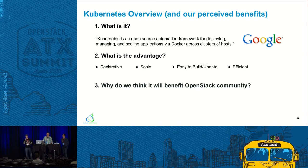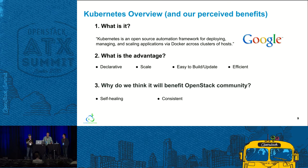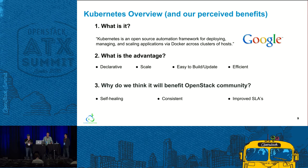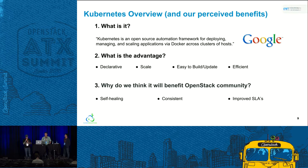Why does Kubernetes benefit the OpenStack community? It's self-healing — auto restart, auto scale, auto replication — features needed now, not tomorrow. It's consistent with your build and resources, pragmatically using only the resources you need on demand. It comes with built-in API health checks — specifically application and service-centric health checks — as well as self-healing services that lead to greater uptime and improved SLAs.